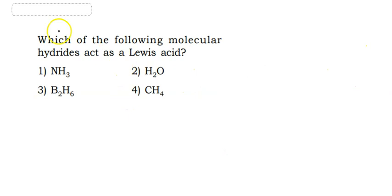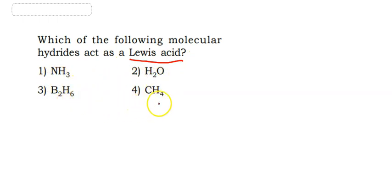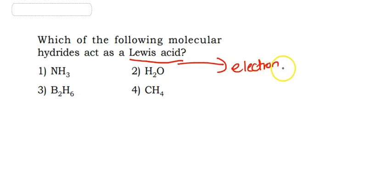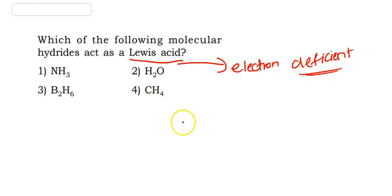The next question is: which of the following molecular hydrides acts as a Lewis acid? The four options are NH3, H2O, B2H6, and CH4. Lewis acids are electron-deficient — they have incomplete octets.